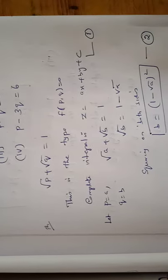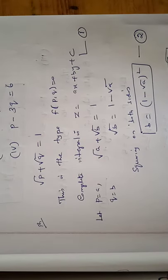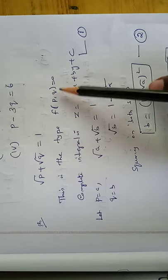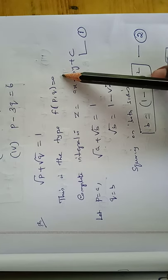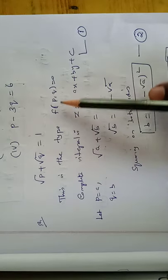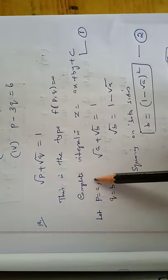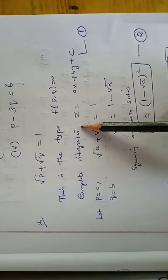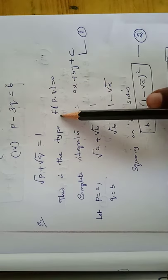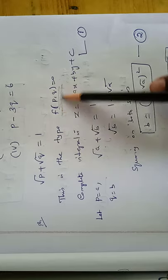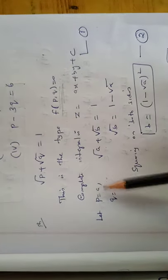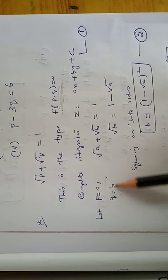Solution for the first problem: root p plus root q equal to 1. This is of the type f(p, q) equal to 0, so we take type number 1. The complete integral form is z equal to ax plus by plus c. We substitute p equal to a and q equal to b.